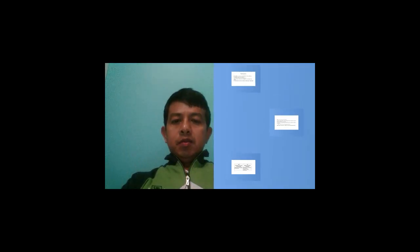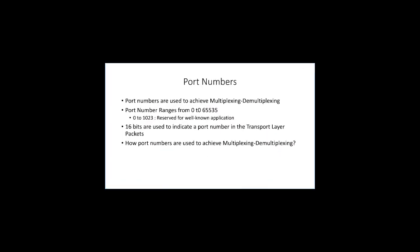To achieve multiplexing and demultiplexing, we use something known as port numbers. We briefly discussed port numbers when covering the application layer. Port numbers are used to achieve multiplexing and demultiplexing. Port numbers start from 0 and can go up to 65535. Port numbers 0 to 1023 are reserved port numbers.